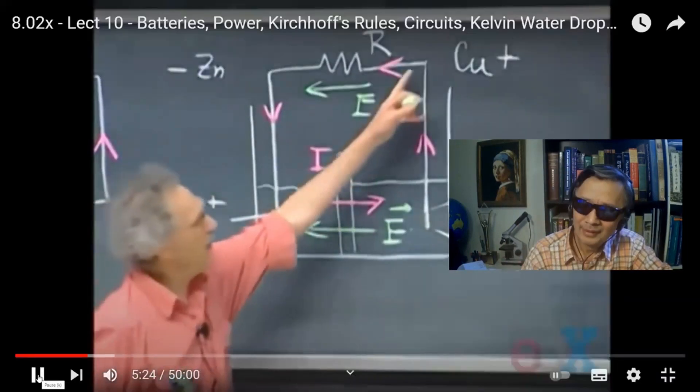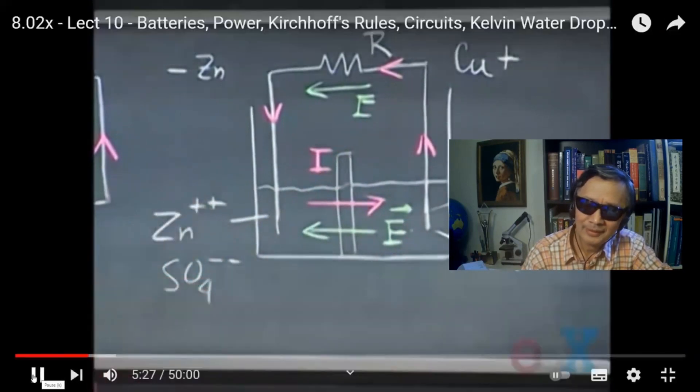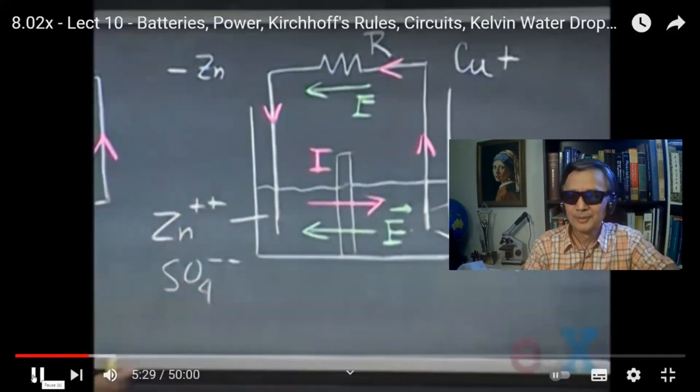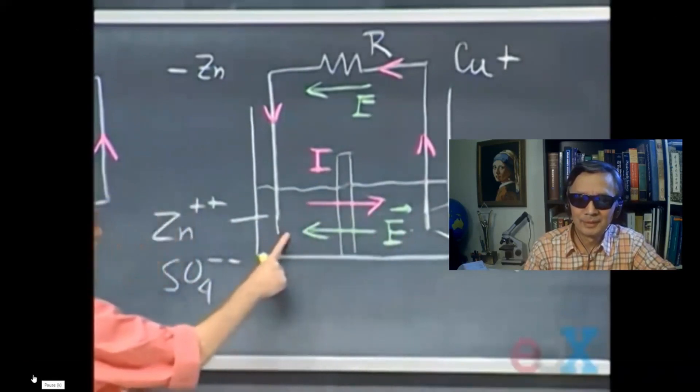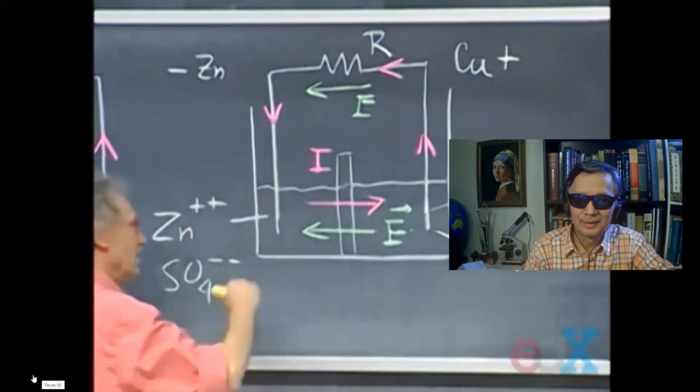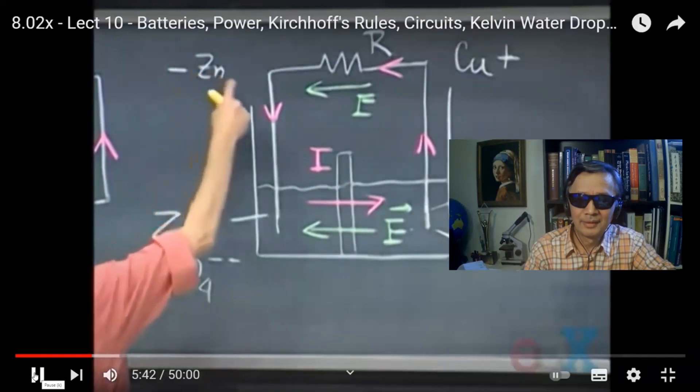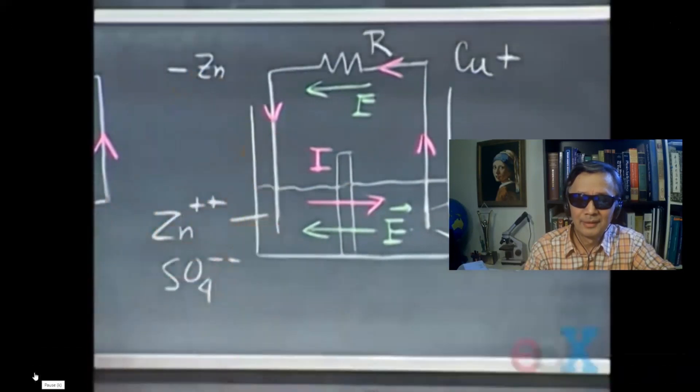And it precipitates onto this copper bar, so it's like copper plating. True. On this side, you get an increase of SO4 minus, therefore you also must get an increase of zinc plus. Yes. Because again, this liquid there remains neutral, and that means that some of the zinc is being dissolved.